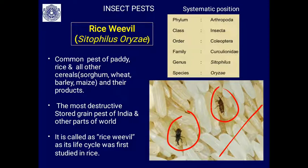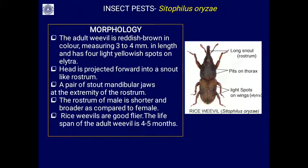It is a major pest of stored grains in India, infesting all grains - wheat, jowar, every grain - including pulses. All of these are infested by this pest, making it the major cause of stored grain loss.